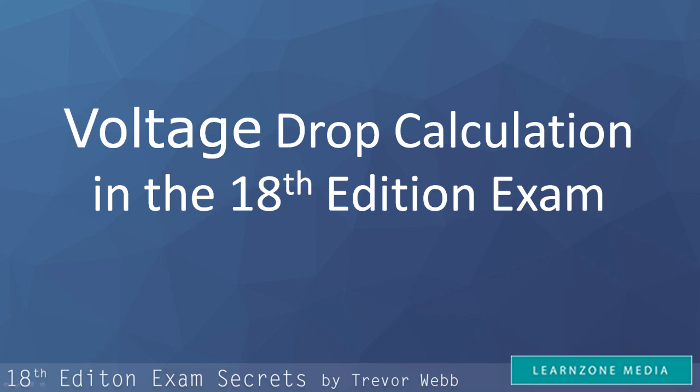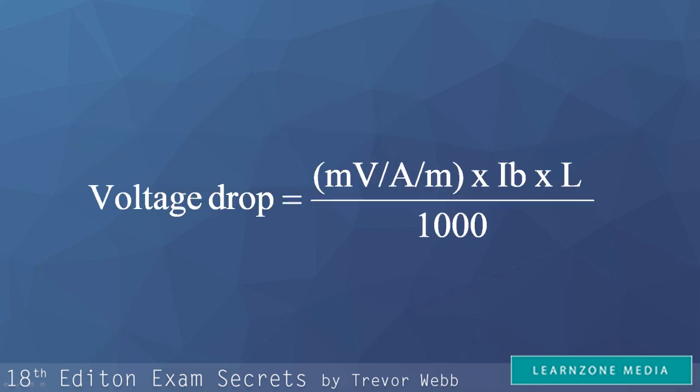The first thing that you need to know is the formula for voltage drop, which is voltage drop equals millivolts per amp per metre times IB times L divided by 1000. This is not mentioned anywhere in the book and that is exactly why I recommend making a note of it in the book right now.